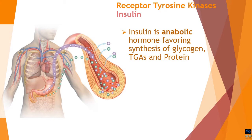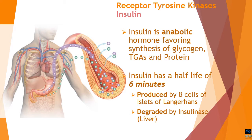Insulin is an anabolic hormone that favors synthesis of glycogen, triglycerides, and proteins by modulating macromolecule metabolism. It has a half-life of six minutes in serum — extending to 12 minutes for full life — from secretion to degradation. It is produced and secreted by the beta islets of Langerhans in the pancreas, and degraded by insulinase in the liver.